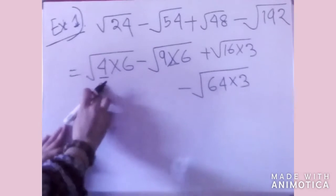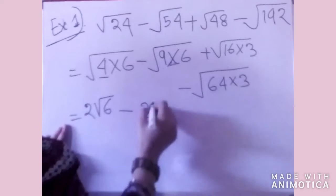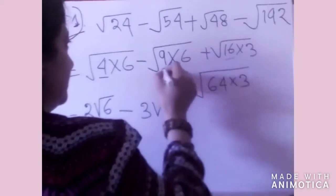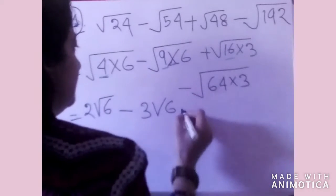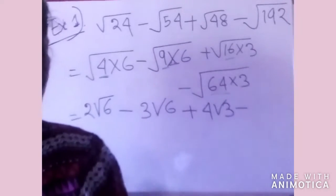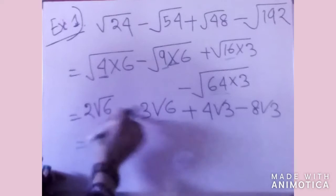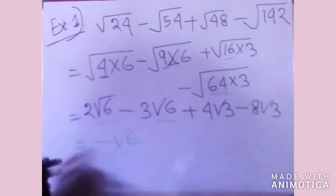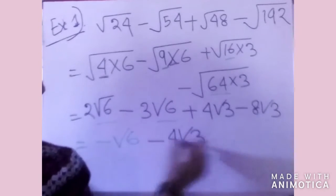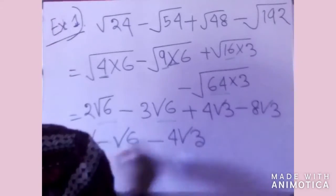Now we will do the addition and subtraction between the similar surds. We have 2 root 6 minus 3 root 6 plus 4 root 3 minus 8 root 3. Grouping similar surds: the root 6 terms give 2 minus 3, which is negative 1, so minus root 6. The root 3 terms give 4 minus 8, which is negative 4, so minus 4 root 3. The final answer is minus root 6 minus 4 root 3.